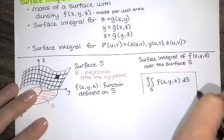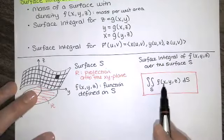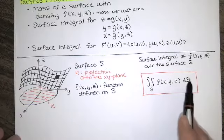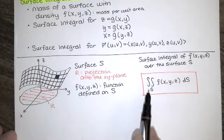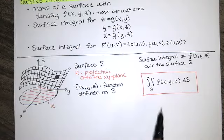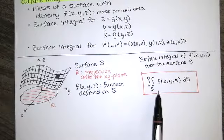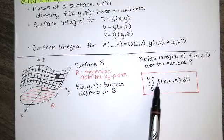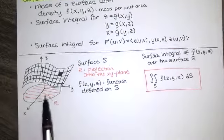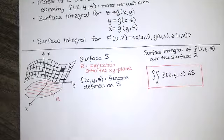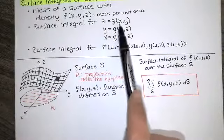Of course this definition is not something you can directly evaluate — you've got too many variables. We have f(x, y, z) and a little dS, representing area of each piece. What we'd like to do is reduce the number of variables. One way is to write this double integral over S as an equivalent double integral over the region R in the xy-plane.